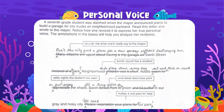Look at your paper. A 7th grade student was alarmed when the mayor announced plans to build a garage for city trucks on neighborhood parklands. Read this letter she wrote to the mayor and notice how she revised it to express her true personal voice. The annotations in the boxes will help you analyze her revision. In the first part she wrote, 'many citizens are upset about having a city garage on Savin Street instead of a park.' But what she would really say to the mayor would be, 'can't the city find a place for a new garage without destroying our Savin Street?' That's how she would really want to express herself.